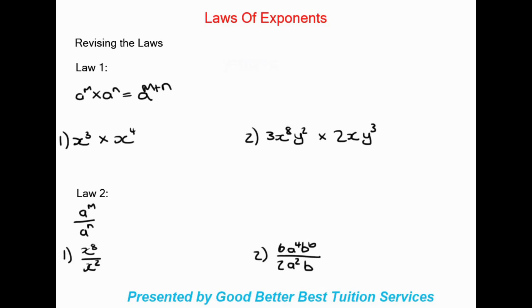For example, x to the power of three times x to the power of four. We have the same base, so we keep that base and add the exponents: three plus four, which gives us x to the power of seven.